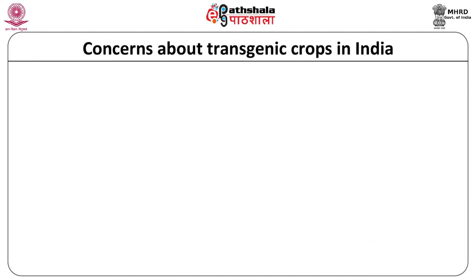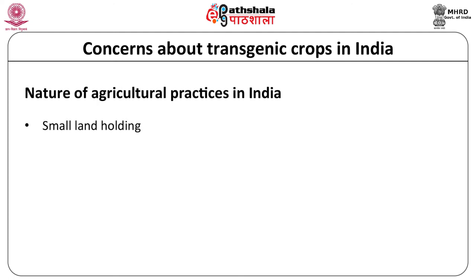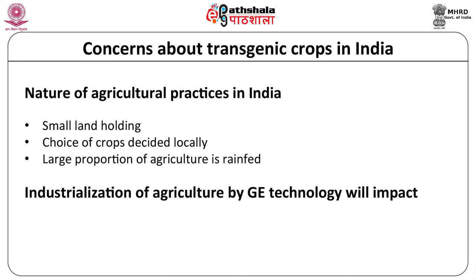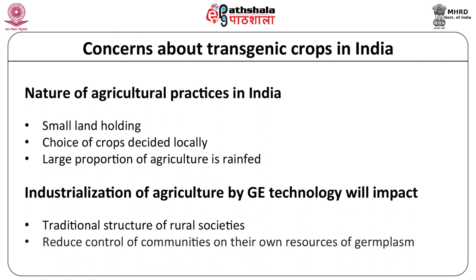An important concern about cultivation of transgenic crops in India pertains to the social fabric of rural society. In India, farmers play a role as breeders, conservationists, and cultivators. The landholding in India is much smaller than in other countries where industrial agriculture is practiced, and the choice of crop to be grown is collectively decided by a group of farmers at a local level and changes each season. Growing transgenic crops may increase the level of industrialization of agriculture, which will impact traditional structures of society and lead to a reduction of community control over their own genetic, natural resources, and cultural values.